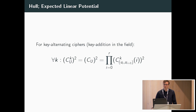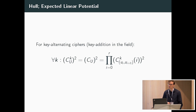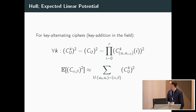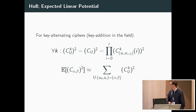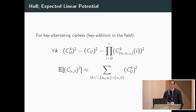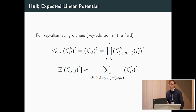For key-alternating ciphers, if you consider the squared correlation it becomes independent of the key — it essentially becomes a constant. We have the notion of an ELP, which will be the expected correlation amplitude for our distinguisher. Under suitable assumptions, we can estimate this as the sum of the squared correlations of trails. In practice, we sum over some smaller subset — calligraphic U — and often this is merely a singleton, in which case you're assuming there is a single dominant trail.